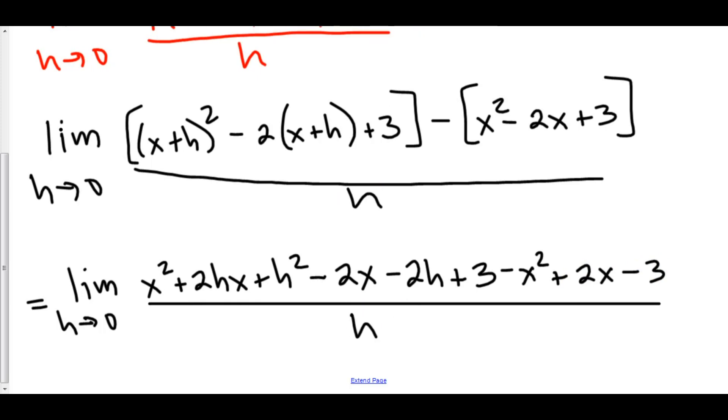Well, here we can start canceling things out. We got x squared, negative x squared, negative 2x, positive 2x, 3, negative 3, and now we're left with...